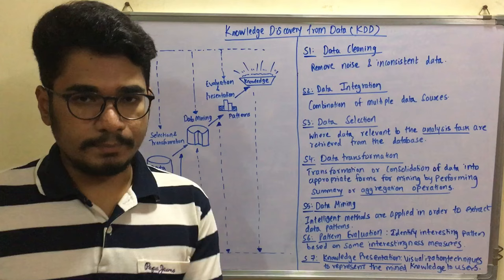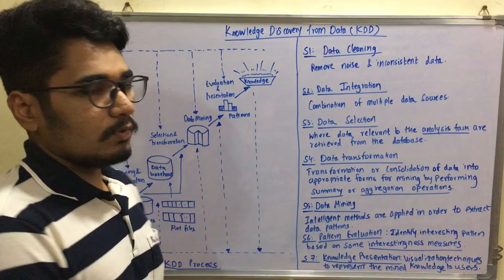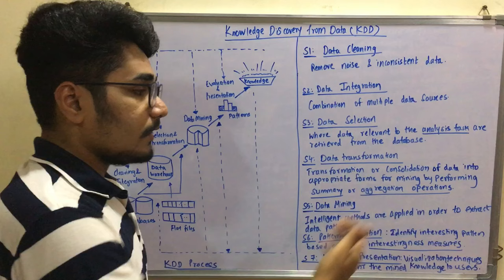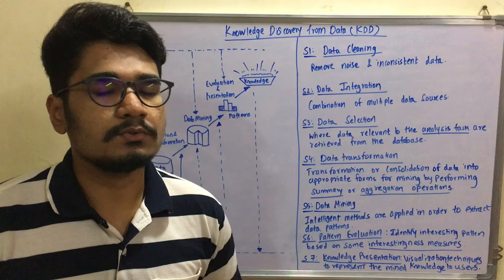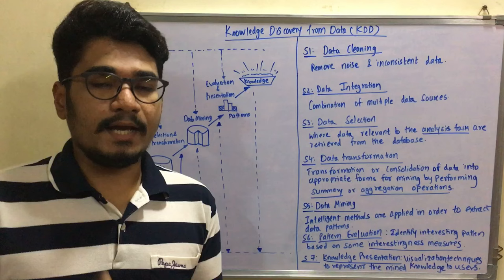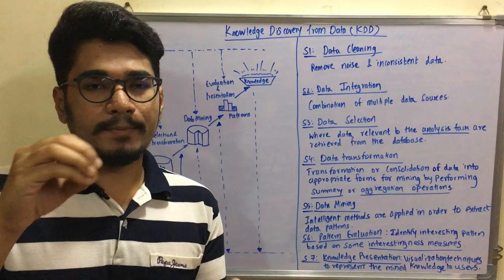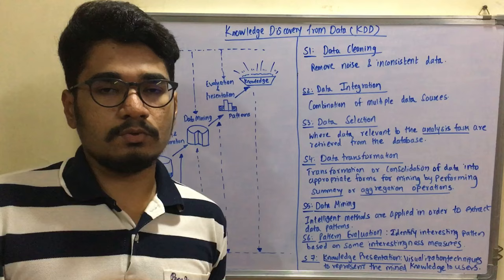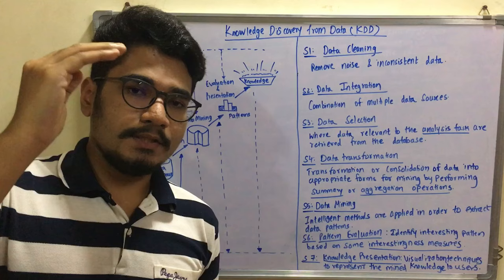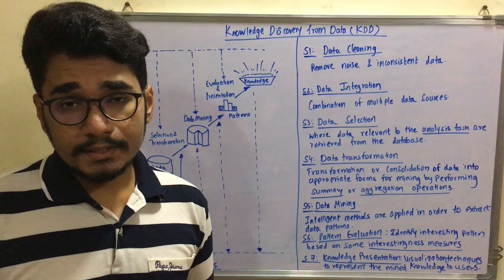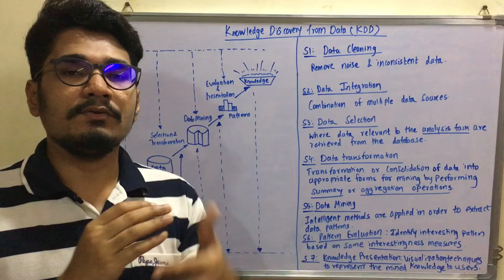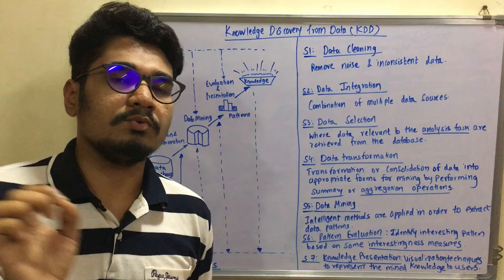Then comes data transformation — the consolidation of data into appropriate forms for mining by performing summary or aggregation operations. You have information from different data sources, so you open a Word file and construct a new document. These different sources may have different grammars, so you eliminate excess grammar and represent content in bullet-point format — point 1, point 2, point 3, point 4 — making it easier for the user to interpret. That is data transformation: converting paragraphs into smaller, concise bullet points.